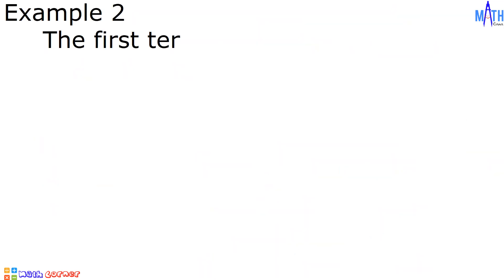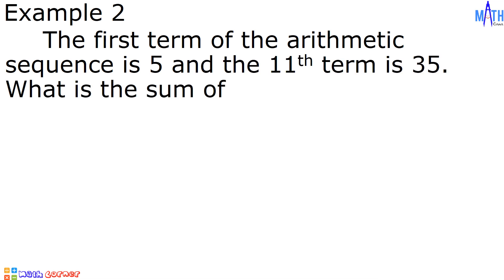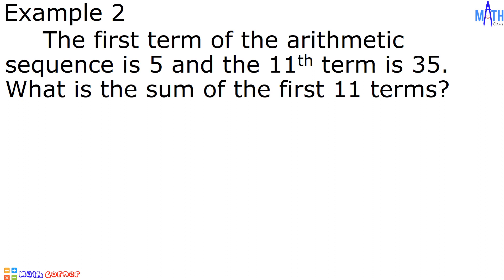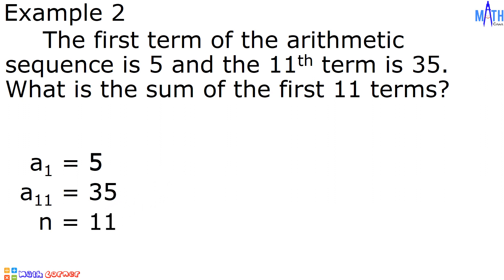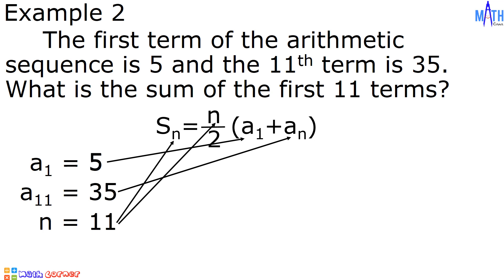Example number 2. The first term of the arithmetic sequence is 5 and the 11th term is 35. What is the sum of the first 11 terms? In this example, the first term is equal to 5. Let us use this formula in solving for the sum since we have values of n, A sub 1, and A sub n. We will substitute 5 to A sub 1, 35 to A sub n, and 11 to n.